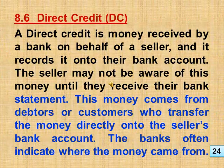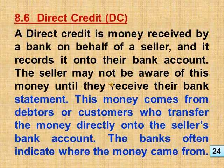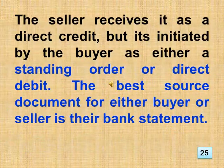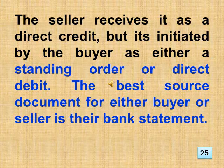Section 8.6: Direct Credit. A direct credit is money received by a bank on behalf of a seller, and it records it onto their bank account. The seller may not be aware of this money until they receive their bank statement. This money comes from debtors or customers who transfer the money directly onto the seller's bank account. The banks often indicate where the money came from. The seller receives it as a direct credit, but it's initiated by the buyer as either a standing order or direct debit. The best source document for either buyer or seller is their bank statement.